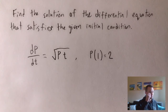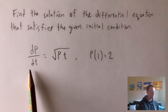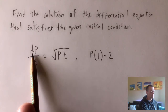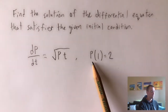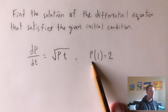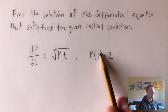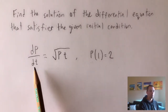Before we jump in, a couple of context clues to keep an eye out for. We need to treat p as a function of t — t is our variable, p is our function. In dp/dt, whatever letter is on top is a function of whatever letter is on the bottom. So p is a function of t. Also, p(1) equals 2 tells us: plug 1 into function p, it outputs 2. So t is the variable.